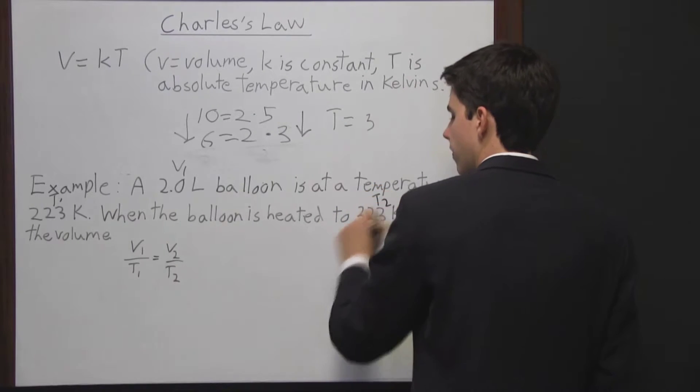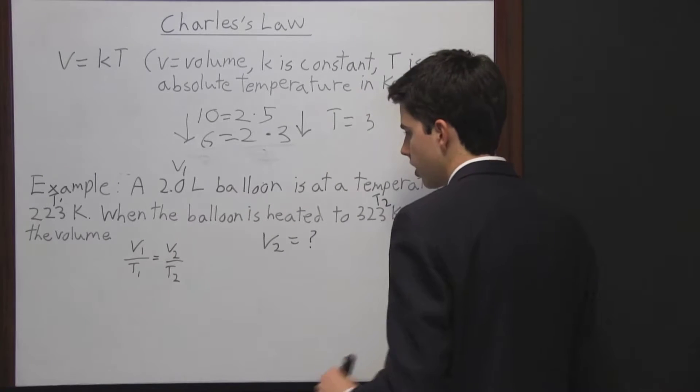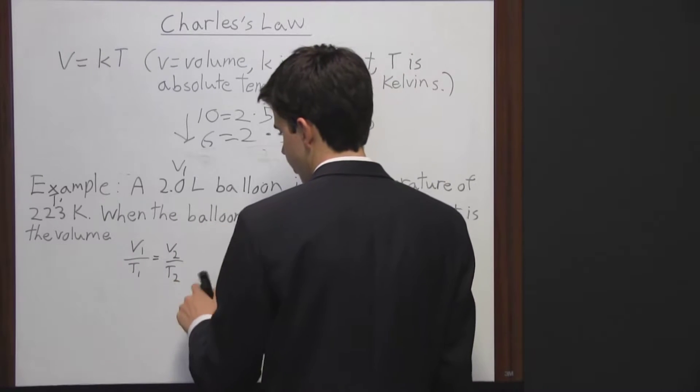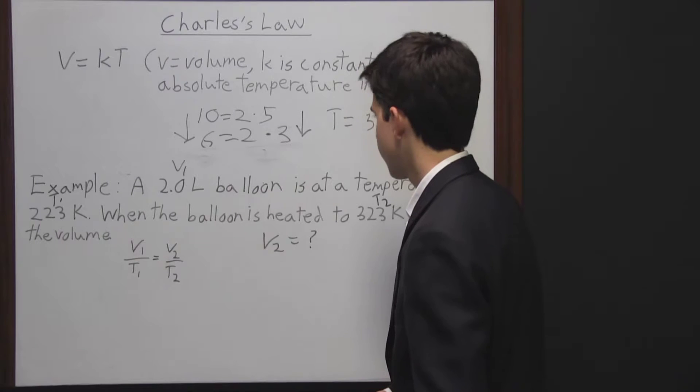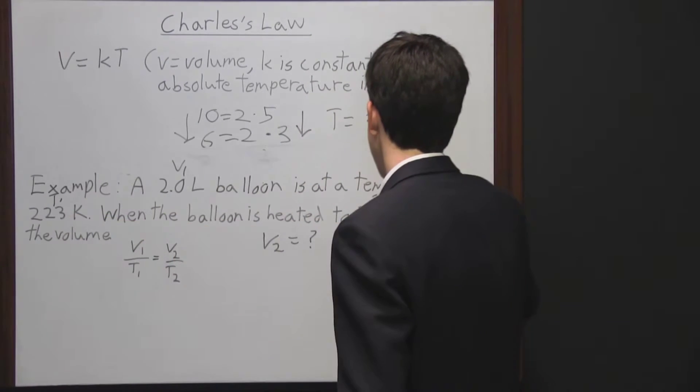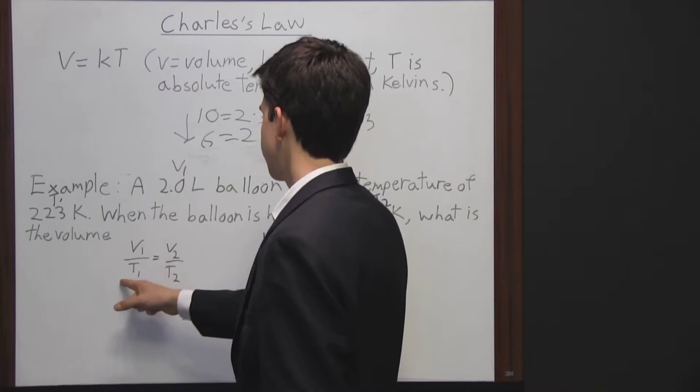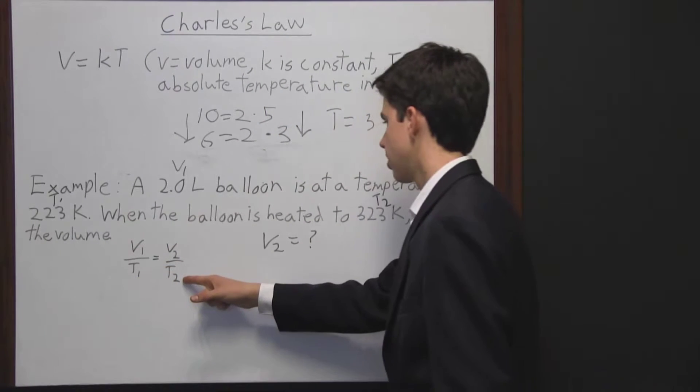So that's T2. Then what is the volume? So V2 is what we're looking for here. We need to get V2 by itself on the side of the equation. Now notice here that the temperature changed. It went from 223 to 323.